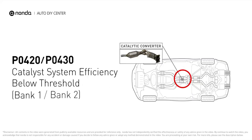P0420 or P0430 indicates that your catalyst system efficiency is below threshold near engine bank one or bank two. This means that the catalytic converter is not functioning efficiently and the vehicle is increasing the output of harmful pollutants.